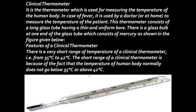Can you tell me what the normal body temperature is? It is marked in red here. Our normal human body temperature is 37 degrees Celsius on the Celsius scale.